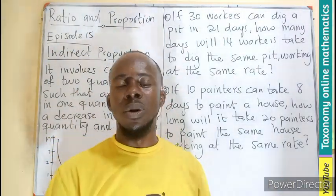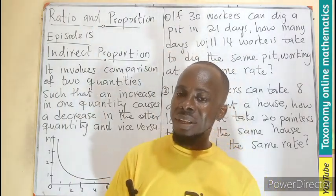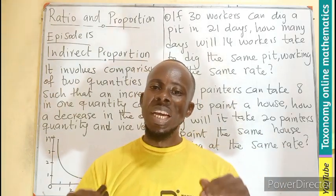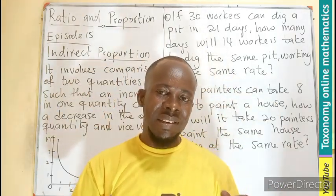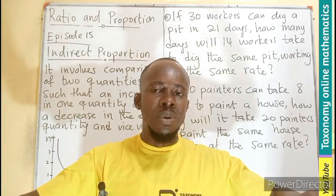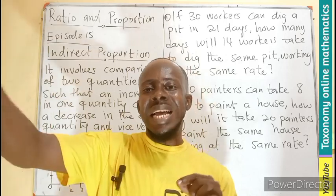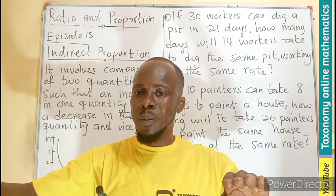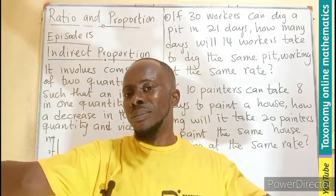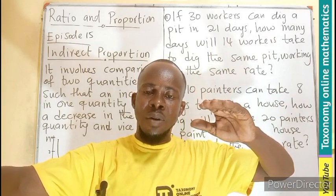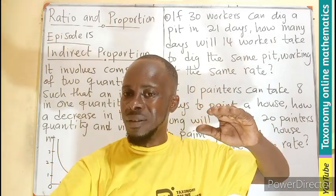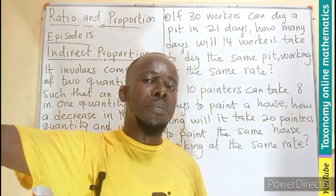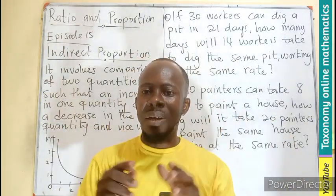For example, if five girls were given 30 minutes to sweep a class — five girls are sweeping a class in 30 minutes — if we increase the number of girls, let's say to 10, working at the same rate, they will need less than 30 minutes to complete the work. The same way, if we decrease the number of girls, they will require more time to complete the work. That is indirect proportion.